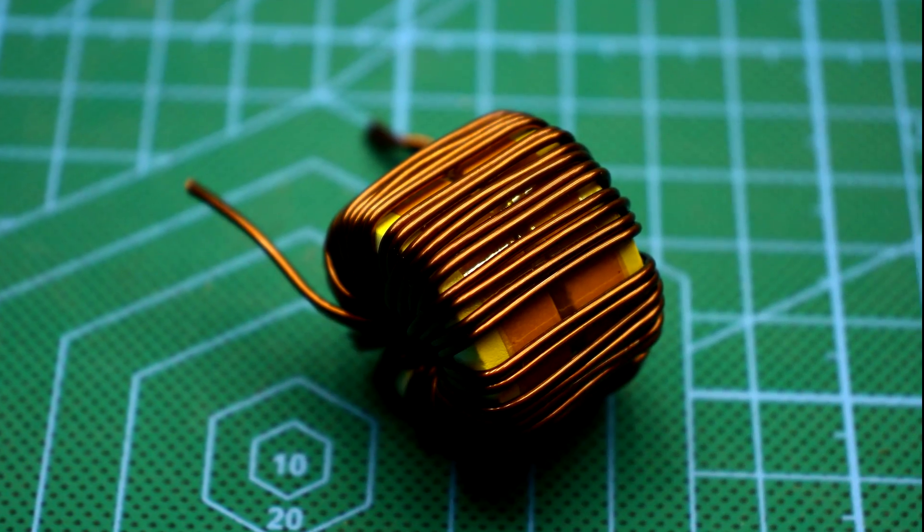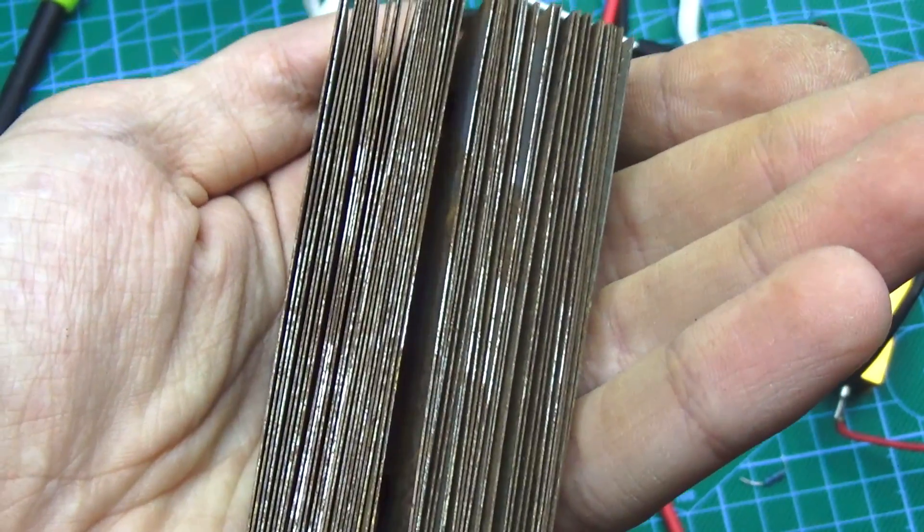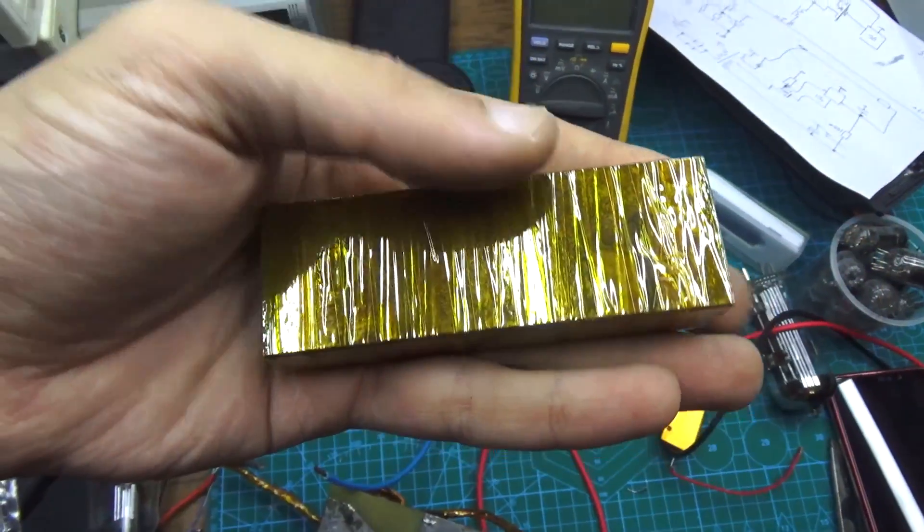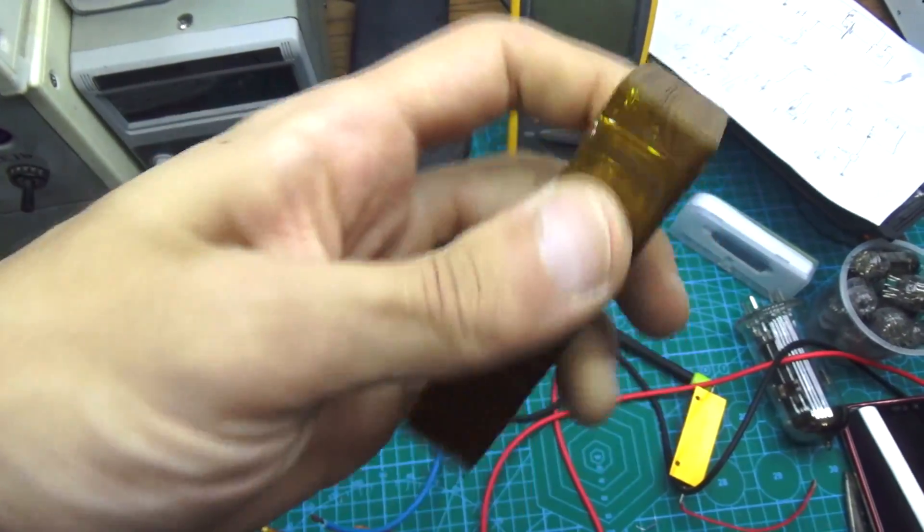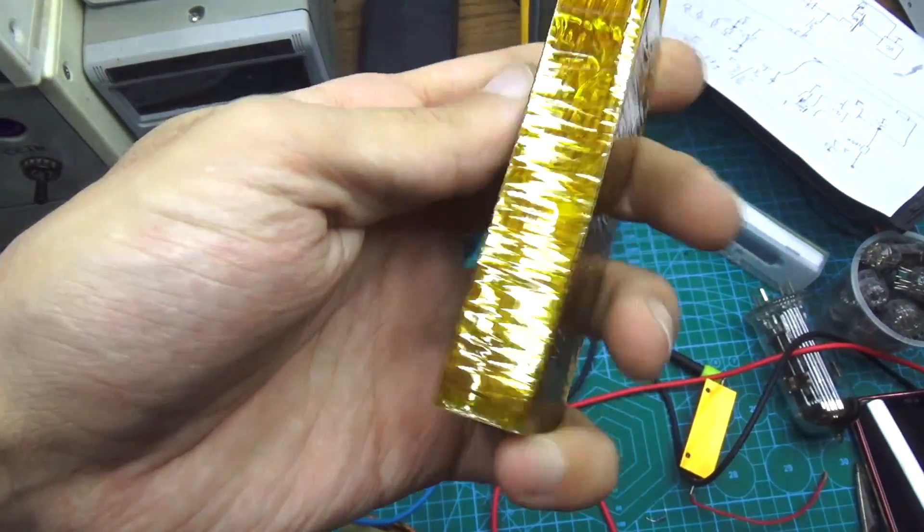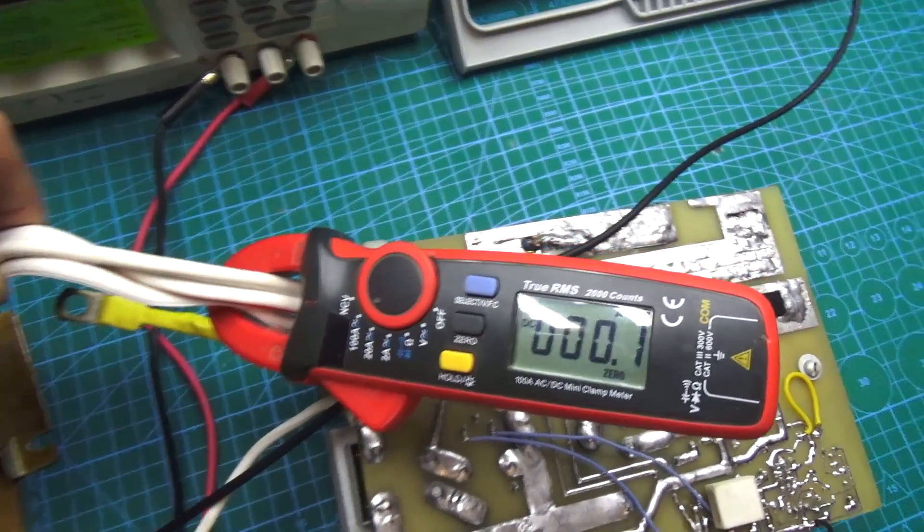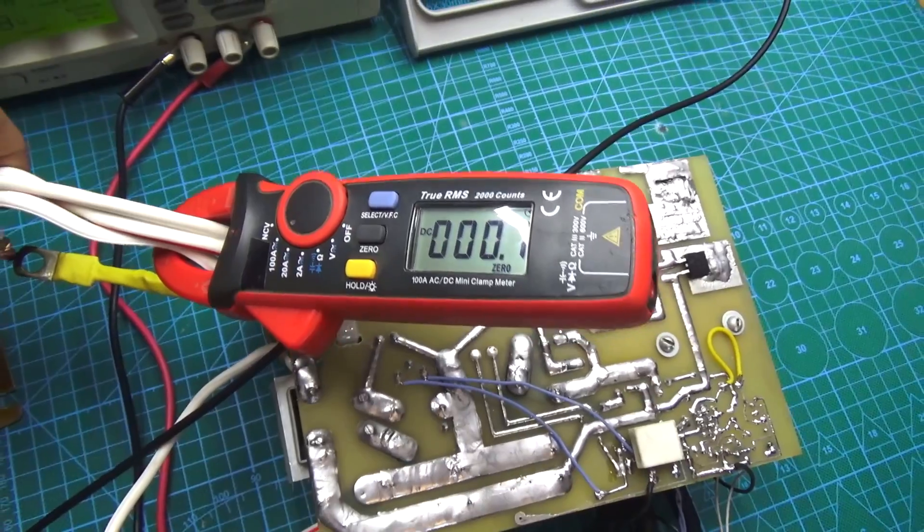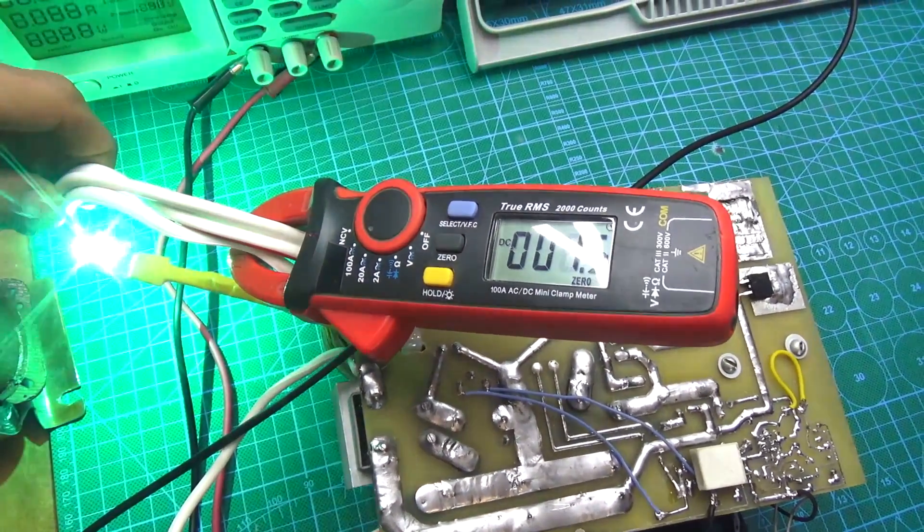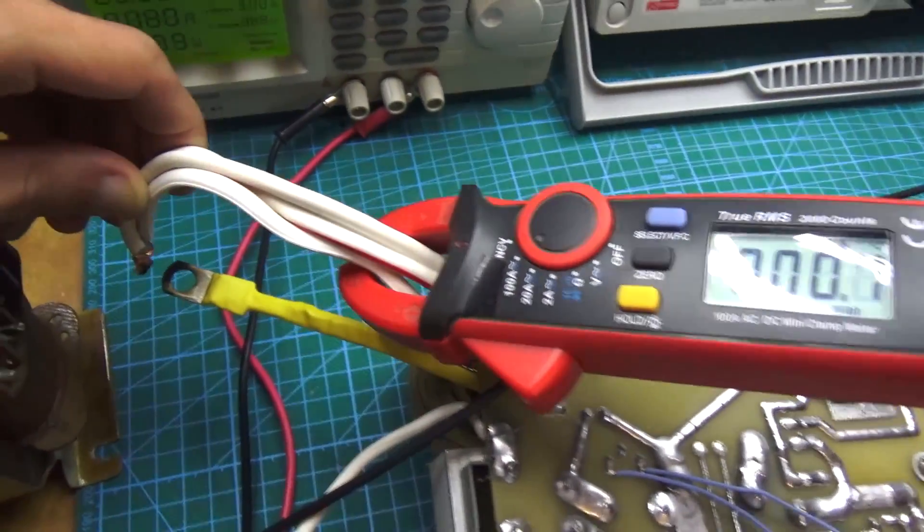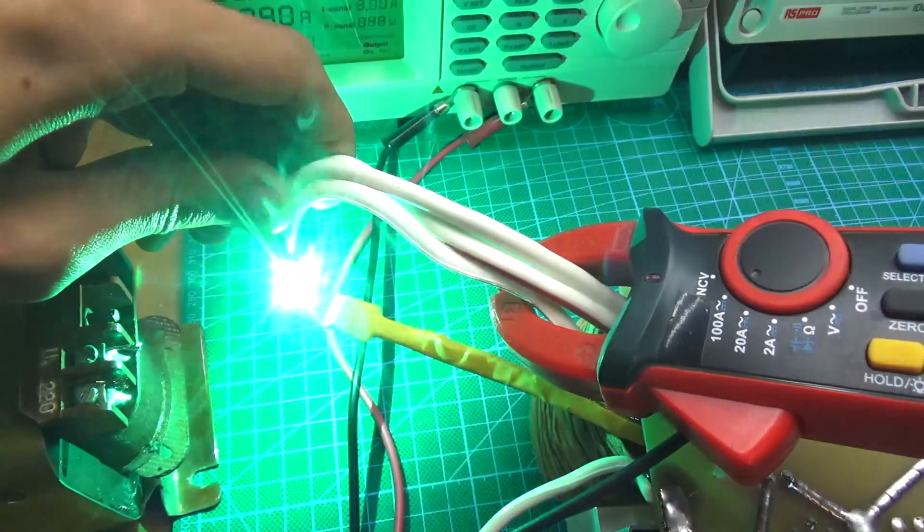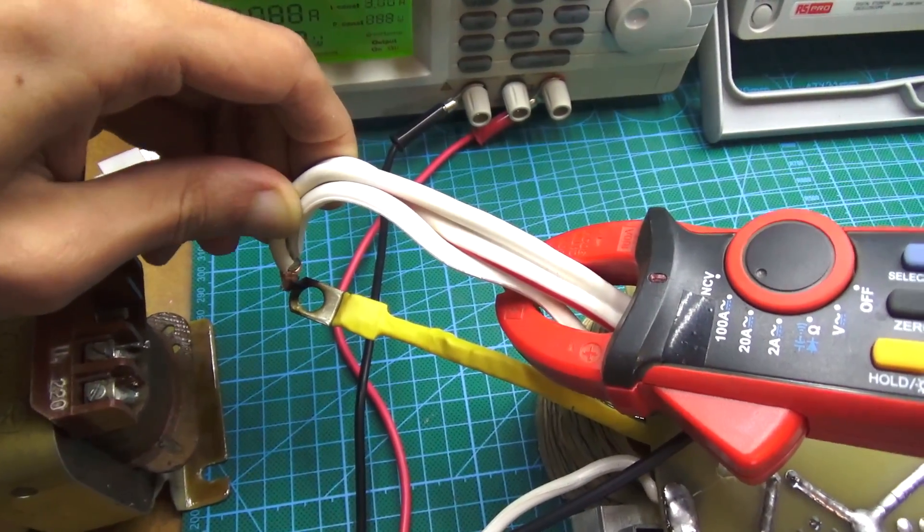As a result, on the advice of a colleague Timur, who previously assembled this welder, my choice stopped on a package of iron transformer plates. The trick is that it's practically impossible to drive such a core into saturation. That is, you can increase the inductance and get a guaranteed ignition of the arc at low currents. As you can see, I got guaranteed soft arc at a current of even 10 amperes, which is good news.